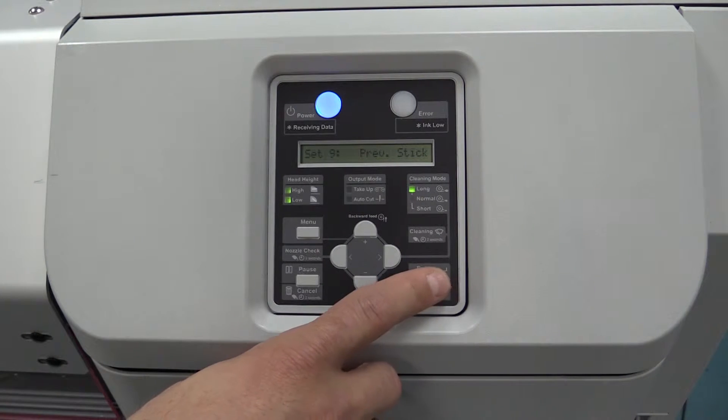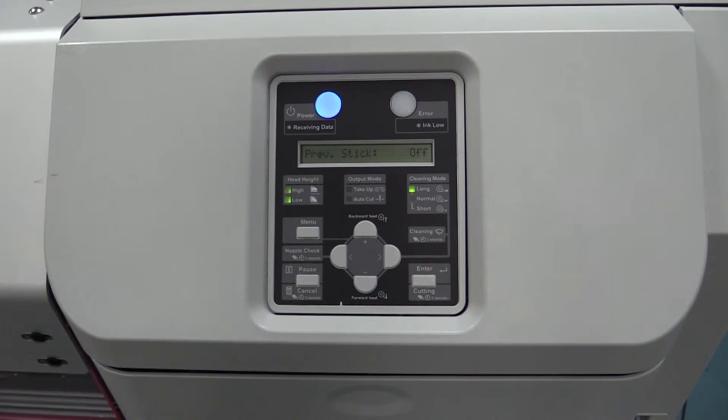Setting 9 is prevent stick. Right now it's set to off. What this does is, as the media sits, you've got heaters that are going to make the media a little warmer. You've got a chance of something building heat, getting tacky, and sticking. So what this does, before it starts printing, it's going to move the media back and forth just to break away anything so you don't have any binding as it starts to print.